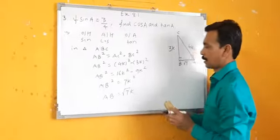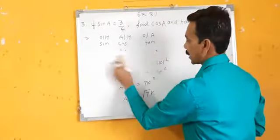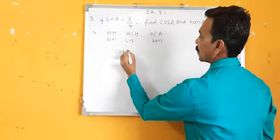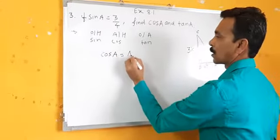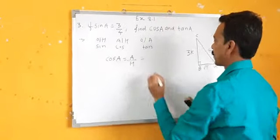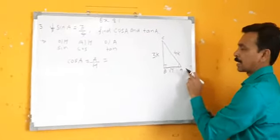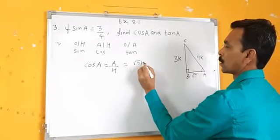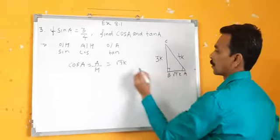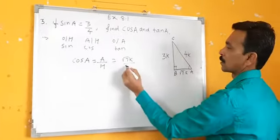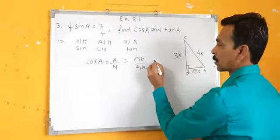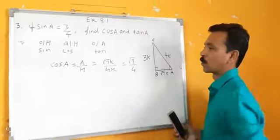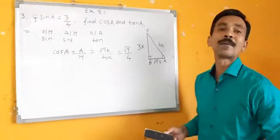First I will find cos A. Cos A — cos means adjacent upon hypotenuse. What is the adjacent side of angle A? AB, which is root 7K. Upon hypotenuse, which is 4K. K and K get cancelled. So cos A is equal to root 7 by 4.